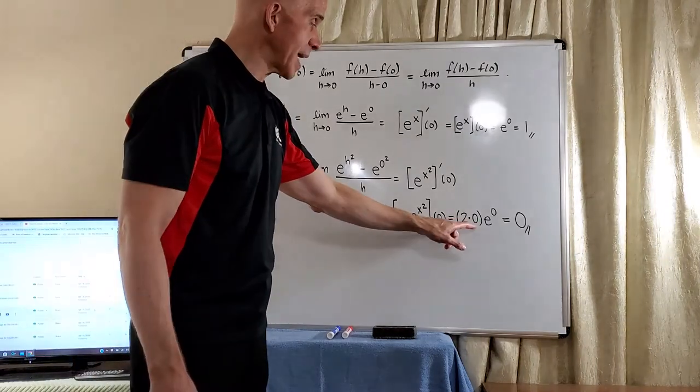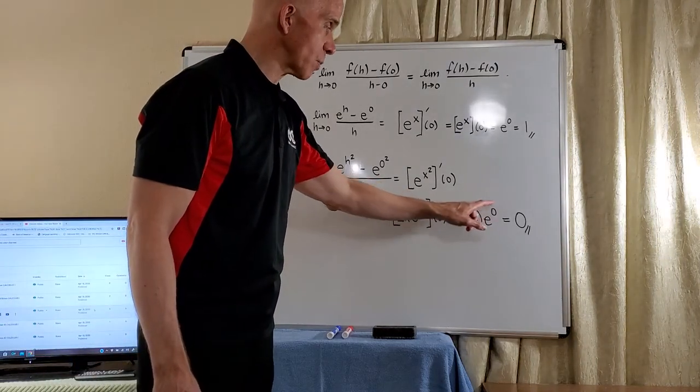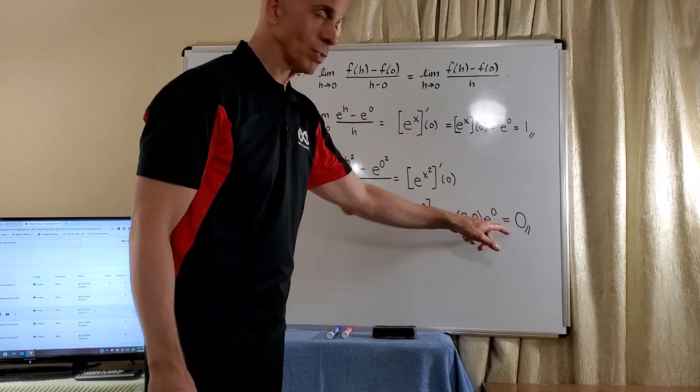So that gives us 2 times 0 times e to the 0, which is 0 times 1, which is 0.